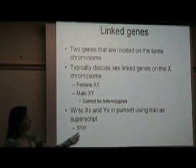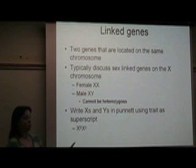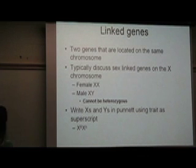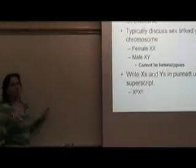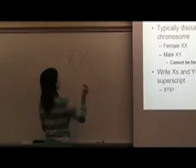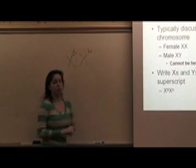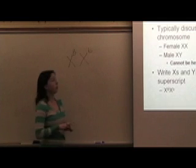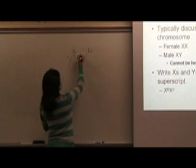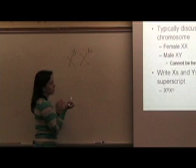Therefore, the way we write it is we use superscripts. So here's an example, and I'll write one on the board as well. We could have a female that's heterozygous, so I make sure that I make my two Xs indicating that she's female. And then I make my alleles as superscripts, similar to the blood typing example. So this female would be heterozygous, okay?